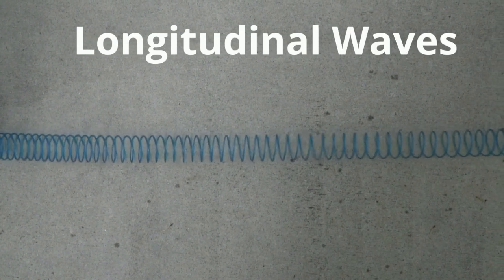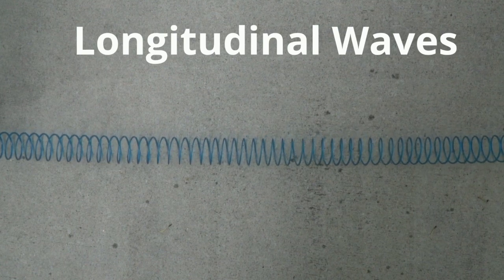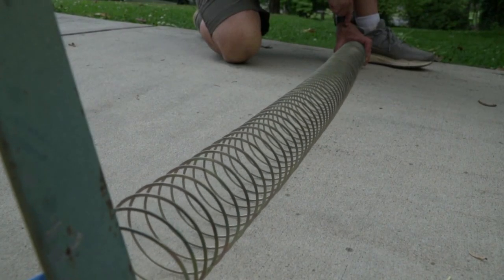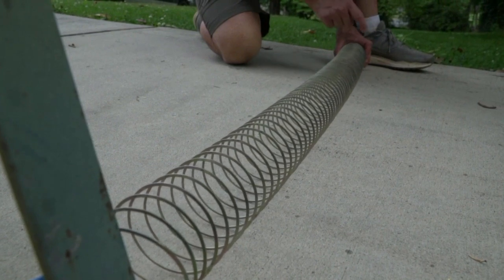Longitudinal waves are also called compressional or compression waves because they produce compression and rarefraction when traveling. Let's take a look at the anatomy of a longitudinal wave.